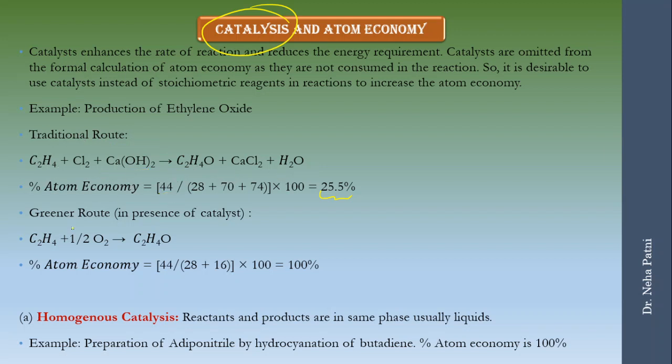When you use green route obviously you are using catalyst there. When catalysts are used normally the reagents are displaced in place of that you are using catalyst and the catalyst is not consumed in the reaction. So it is actually not calculated in atom economy. Its presence is there but its molecular weight is not going to be included. This is the product and if you divide it by reagent you will get almost 100 percent atom economy.